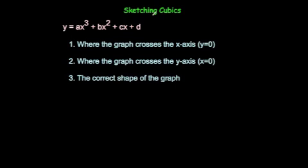In this video we're going to look at sketching cubic graphs. A cubic graph is in the format y equals ax cubed plus bx squared plus cx plus d. It may not have the bx squared bit or the cx or the d, but it always will have an ax cubed — that is, ax cubed as the highest power term. To sketch a cubic graph you're going to need to do a few things.